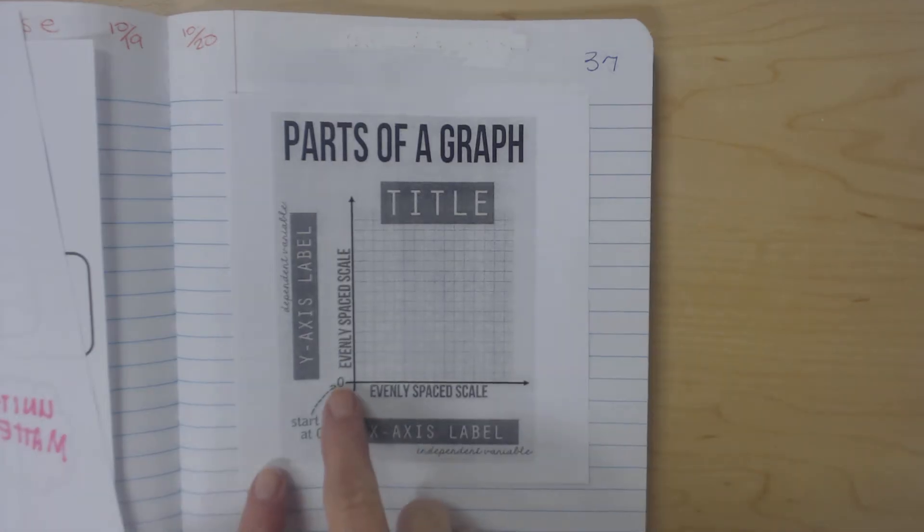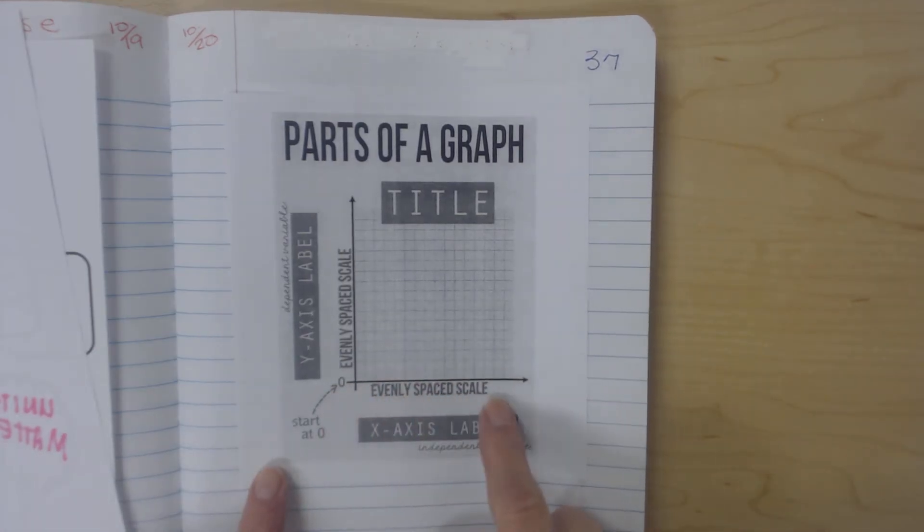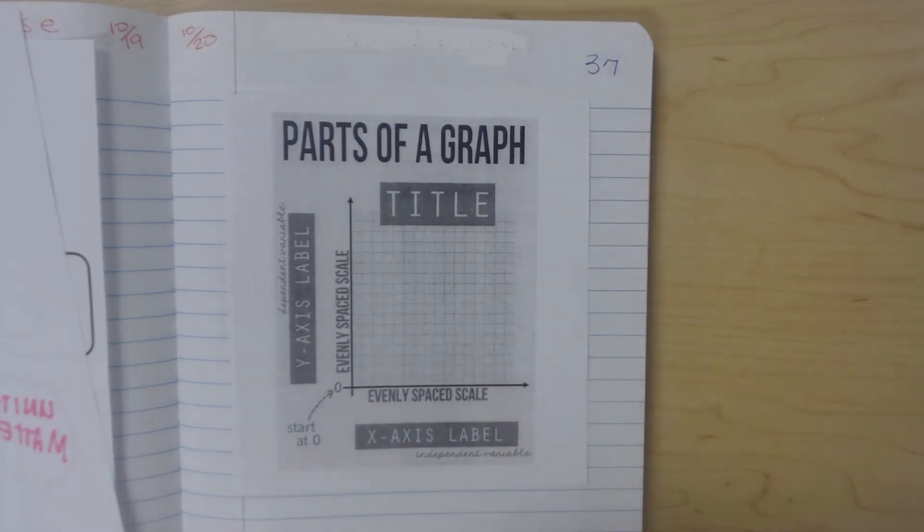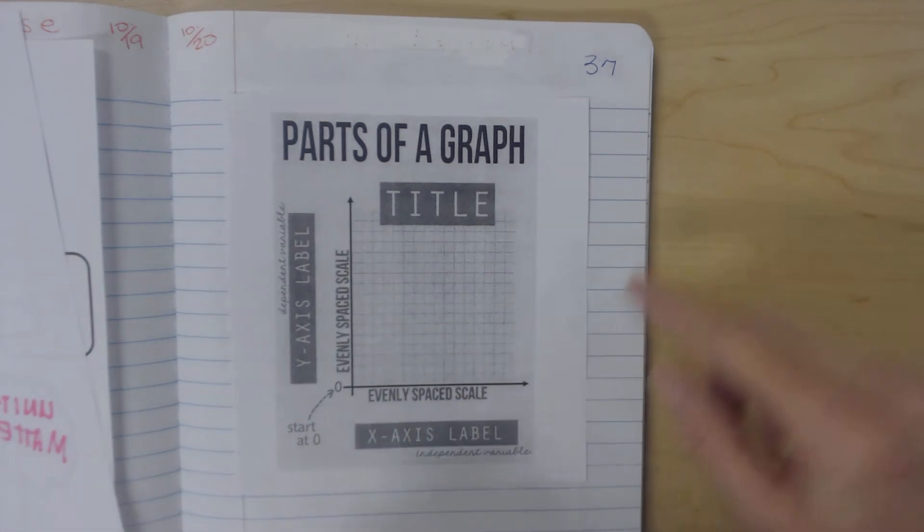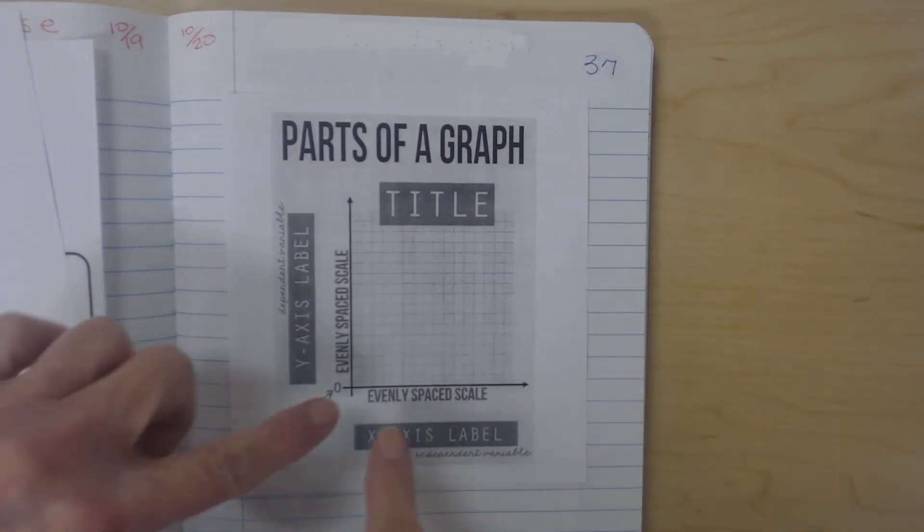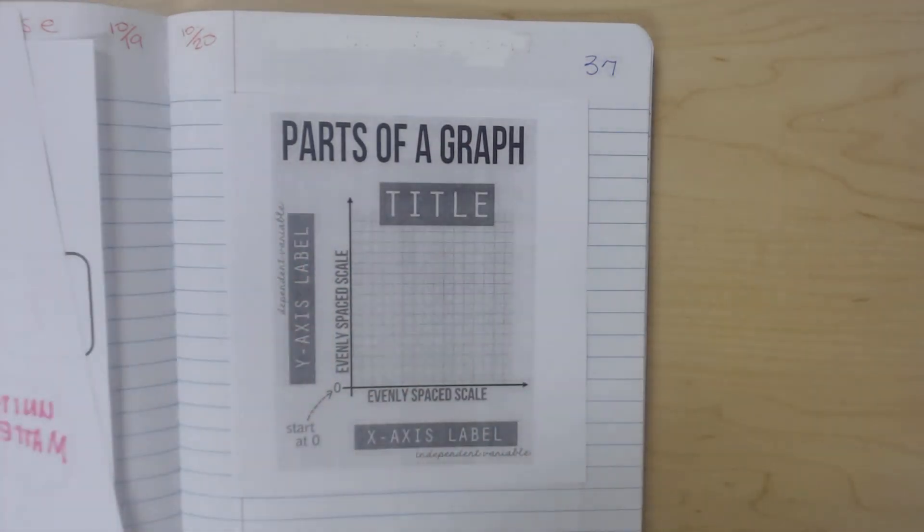You need to make sure that your x-axis is evenly spaced. You may not always count by ones. You may count by twos or fifties or twenties or even by thousands. And the x-scale does not have to be exactly the same as the y-scale, but they do both need to be evenly spaced.